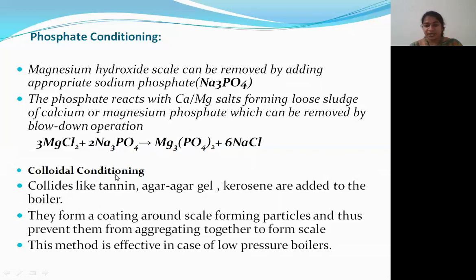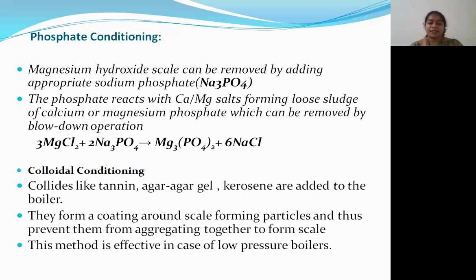Next is colloidal conditioning. In colloidal conditioning, we remove all hardness-producing salts by adding colloidal substances such as agar-agar, kerosene, or other colloidal substances to the water. These form a coating around scale-forming particles, preventing them from aggregating and forming scale. This method is effective in the case of low-pressure boilers.